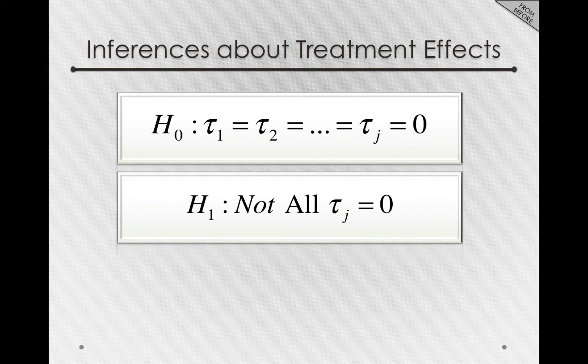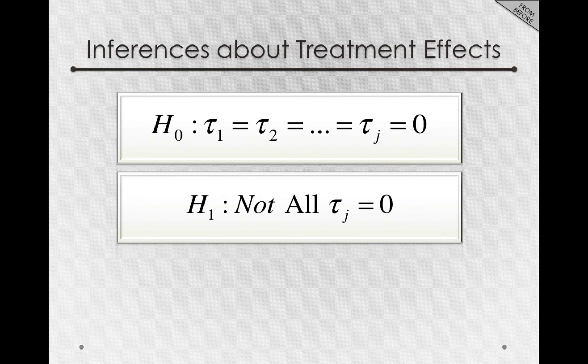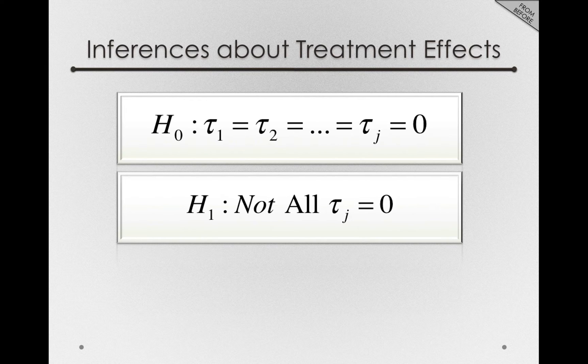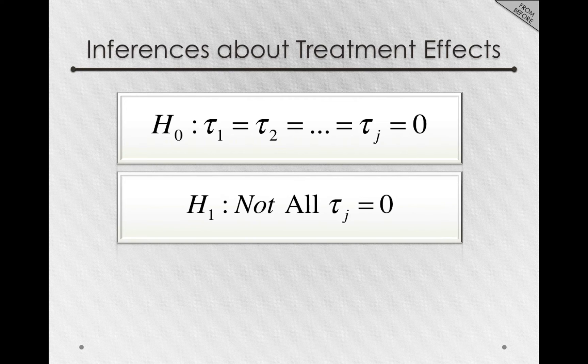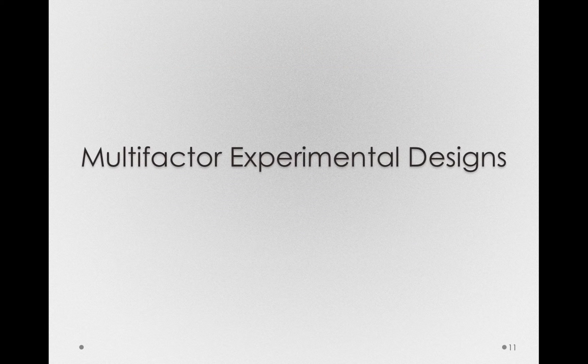So far, our inferences about treatment effects have been limited to the effect of a single factor. That is, we were testing simply τ_j's. But what we'll do now is develop a two-factor linear model that will allow us to form hypothesis tests in multi-factor experimental designs.